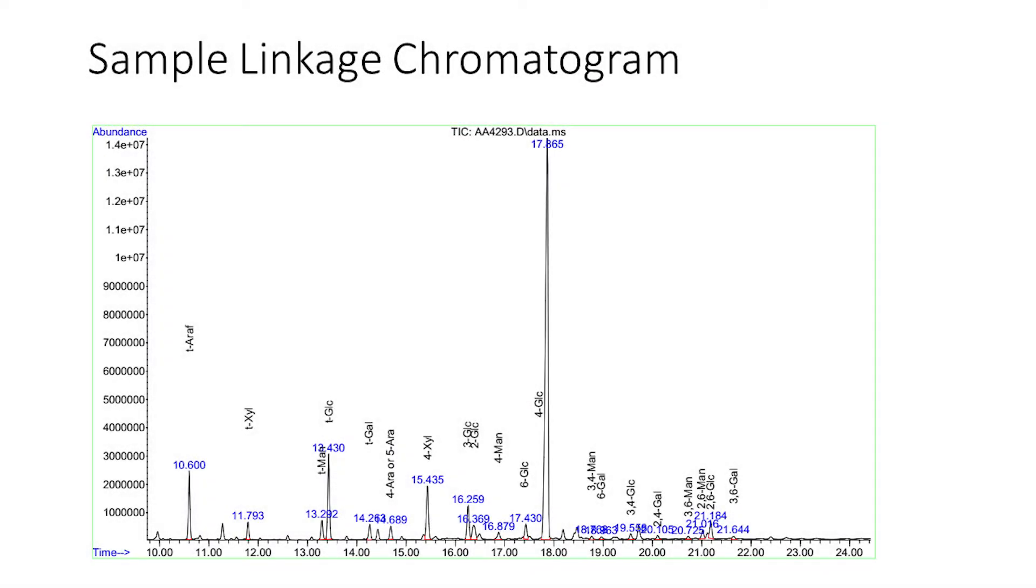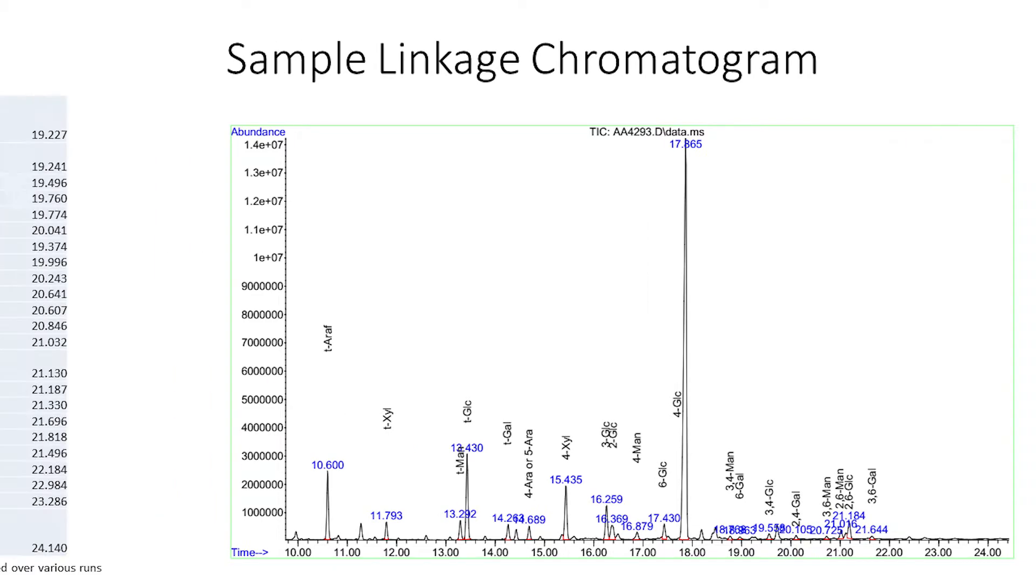Now, we'll be looking at an example GC chromatogram and going over how to identify peaks that are obtained by the GC-MS. Here, we have an example of the partially methylated alditol acetate residues or PMAA residues detected by the GC-MS in a sample. We have already identified the glycosyl linkage residues in this chromatogram.